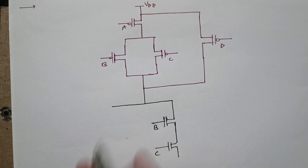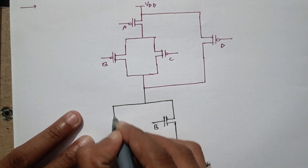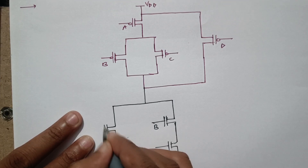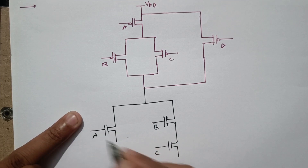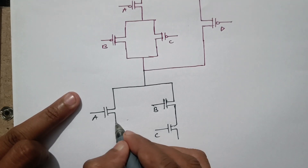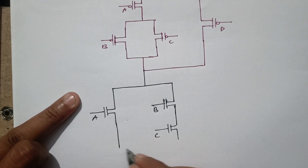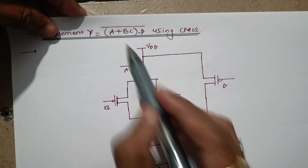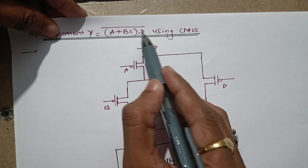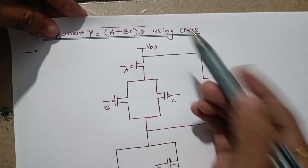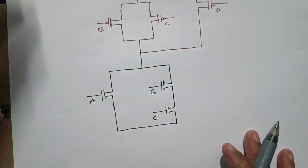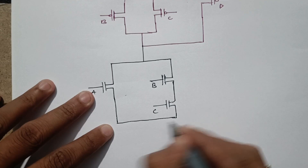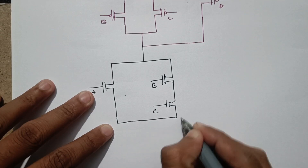BC is in addition with A. For addition, NMOS should be in parallel, so BC will be in parallel with A. We draw an NMOS with input A in parallel with BC. Next, this A plus BC is in multiplication with D. For multiplication, NMOS will be in series, so this entire combination is now in series with D.